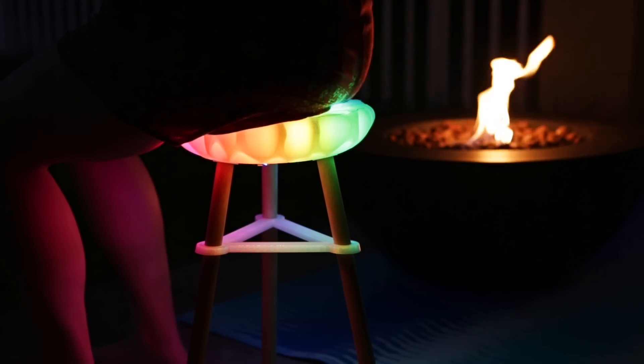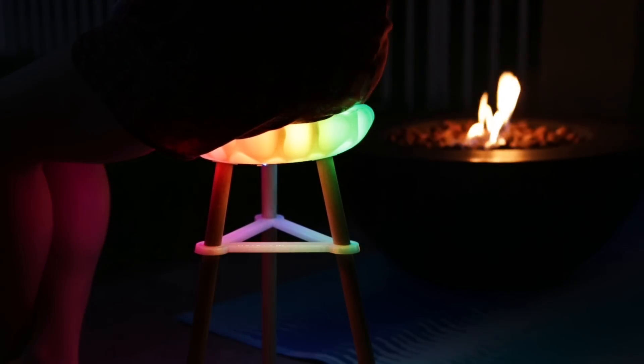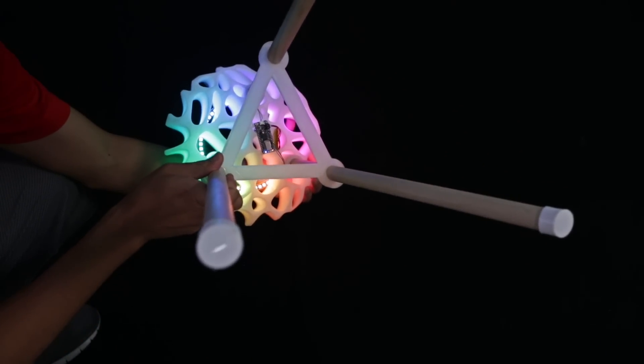The 3D printed seat can hold up to 200 pounds of weight so it's safe to sit on and you can use it indoors or out. The electronics are mounted to the bottom of the seat and they appear hidden when viewed from above.